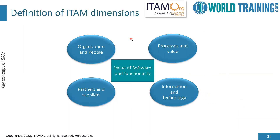We now have the four dimensions of ITAM: organization and people, partners and suppliers, information and technology, and processes and value. If you are familiar with ITIL 4, you would know that ITIL 4 has the four dimensions of service management, which are exactly the same. Organizations should have a holistic view of all aspects of their behavior to create value. Processes should be implemented across the organization and should support the SAM team to create value. Information and technology dimensions should handle SAM data through SAM-relevant tools to create value. Partners and suppliers should be controlled and managed through reliable contracts to create value. At the center, we have the value of the software and functionality, which depends on the value derived from these four dimensions.